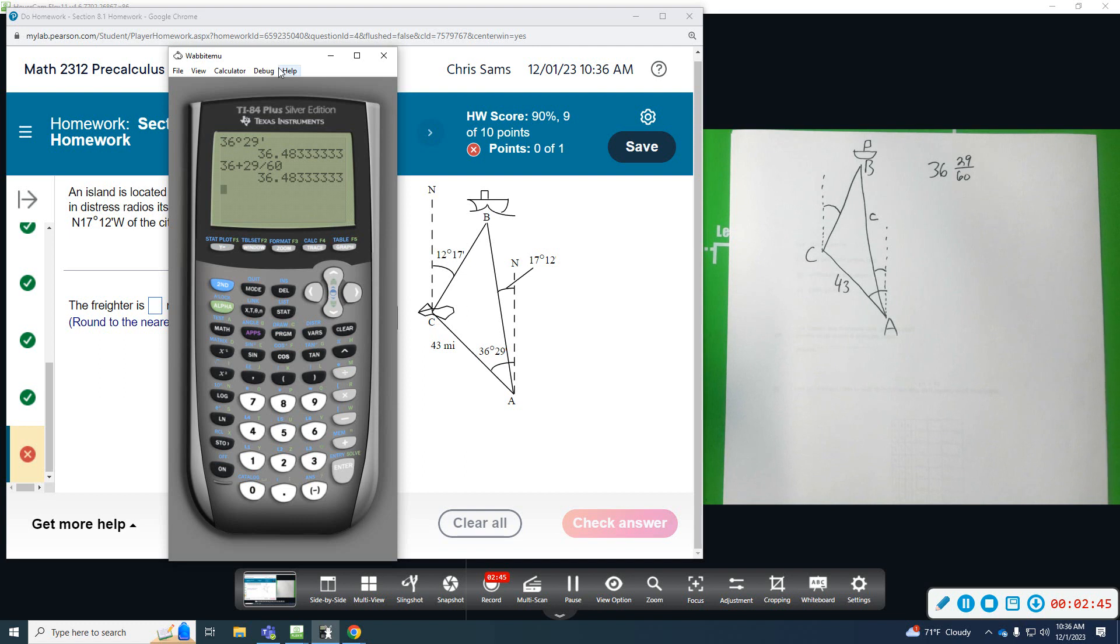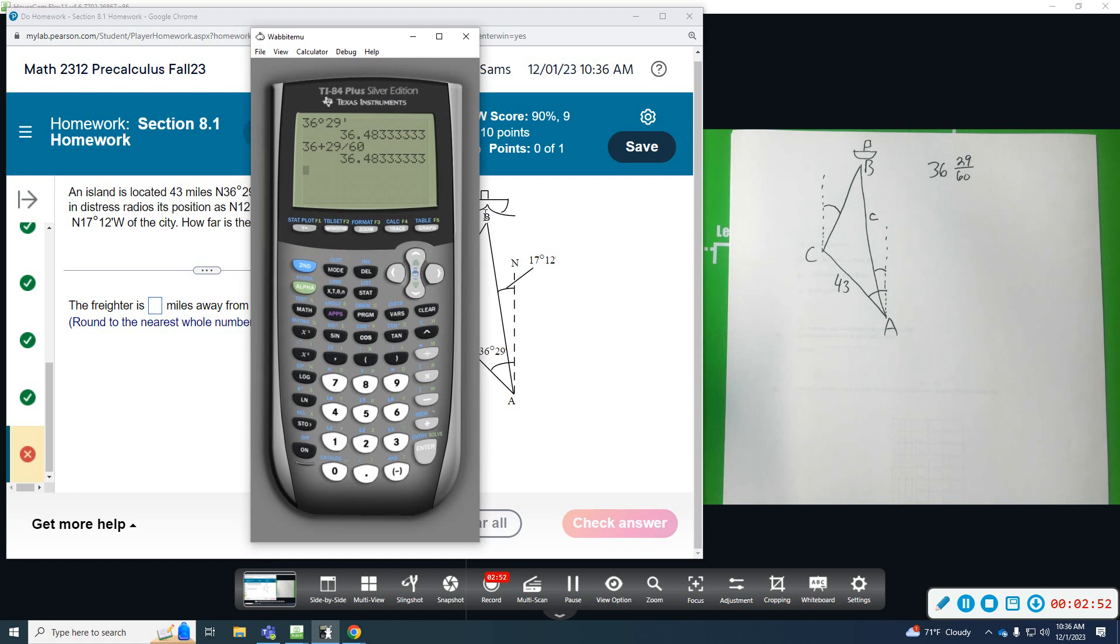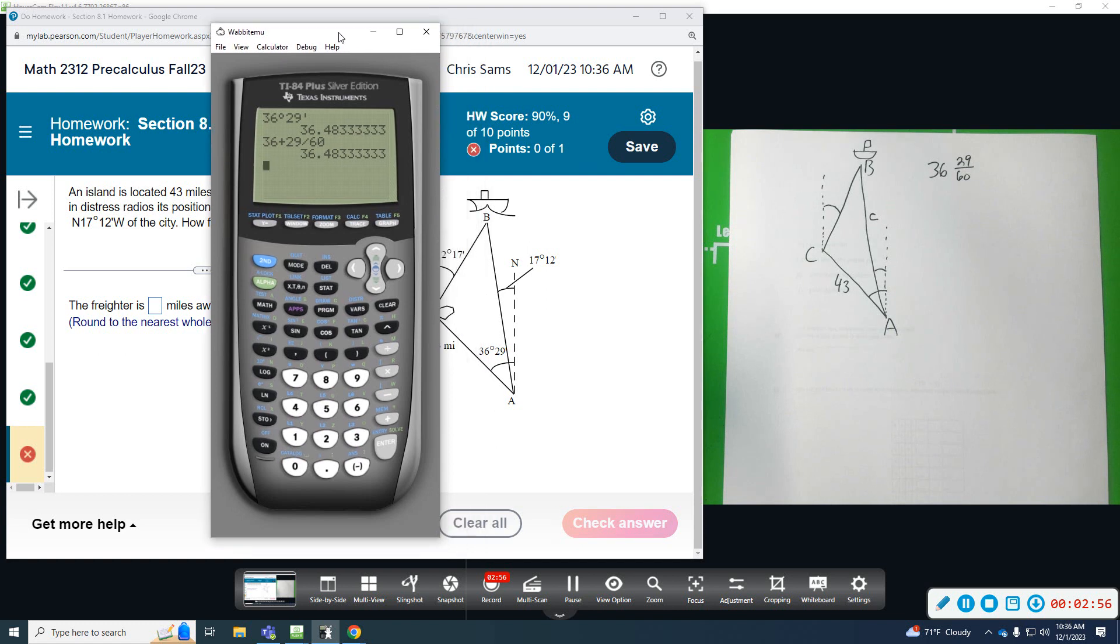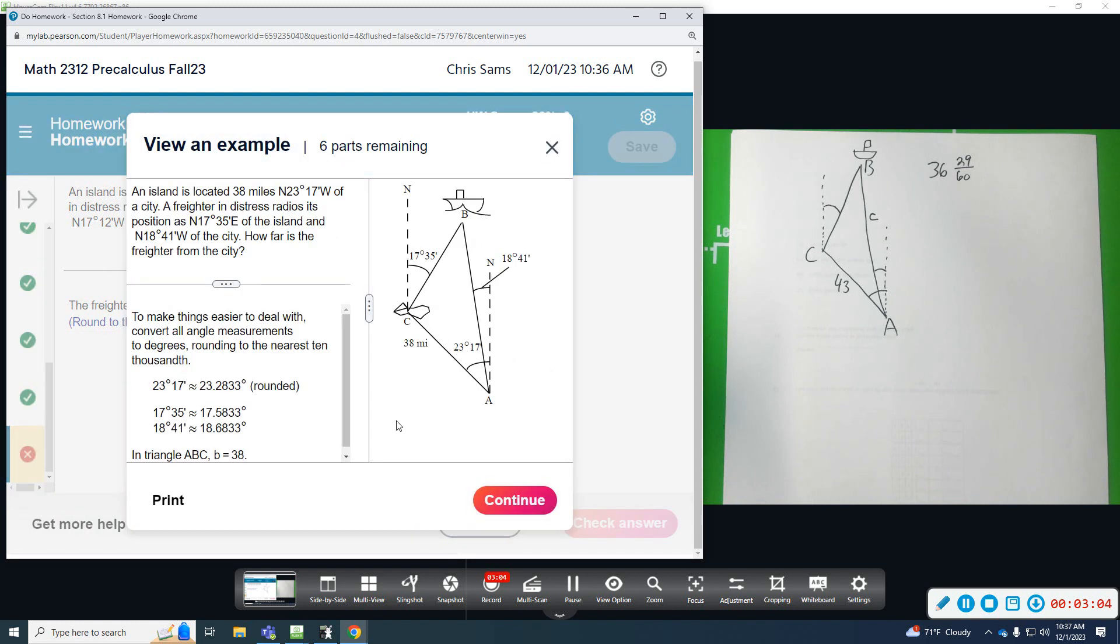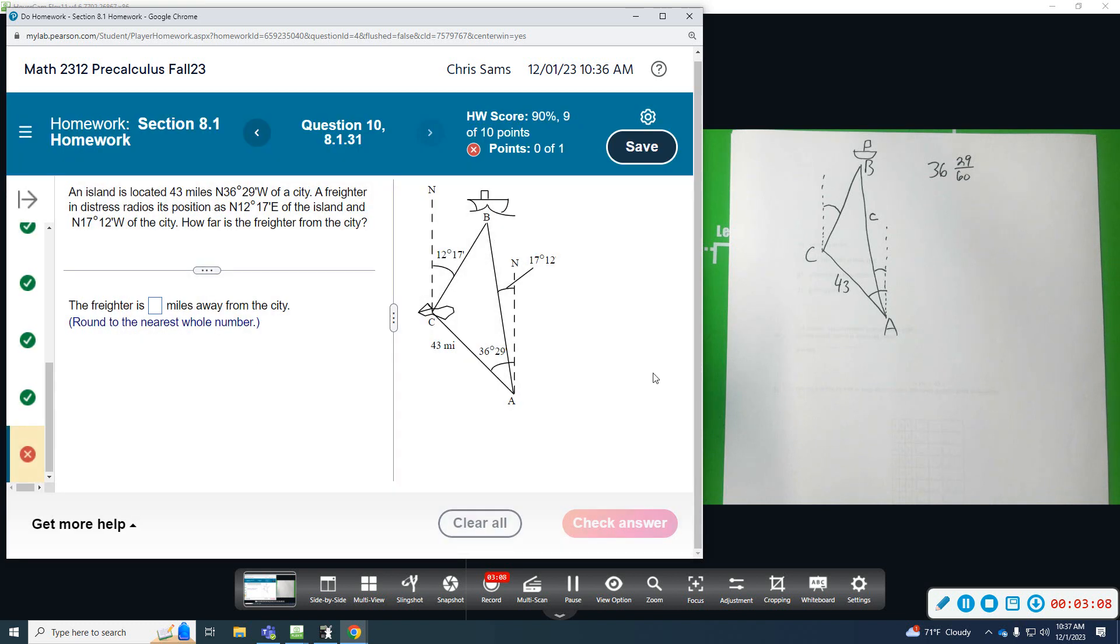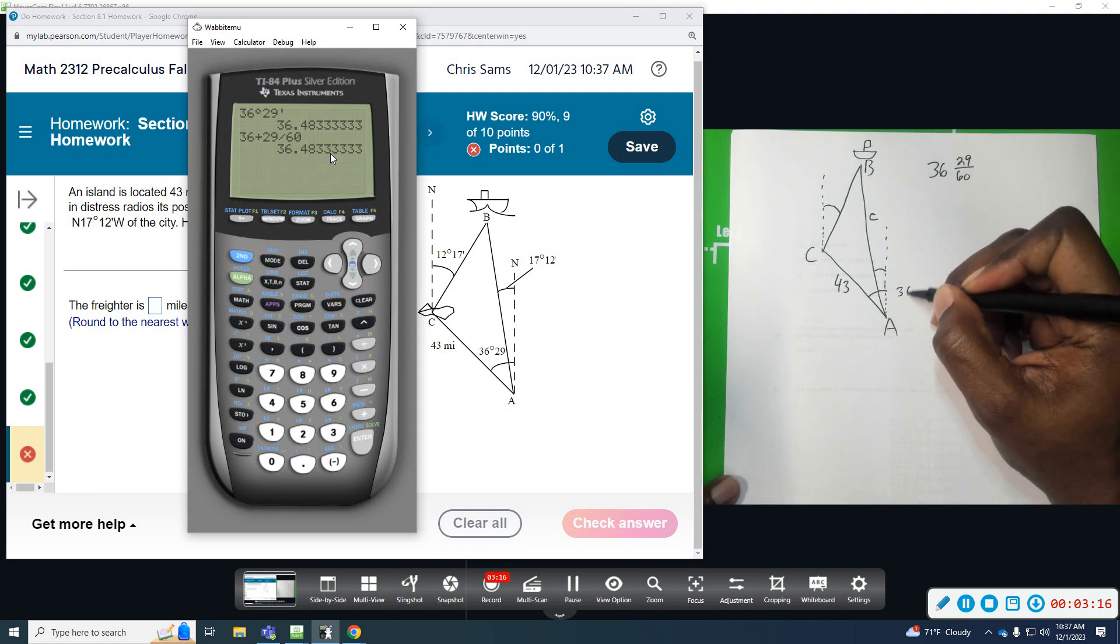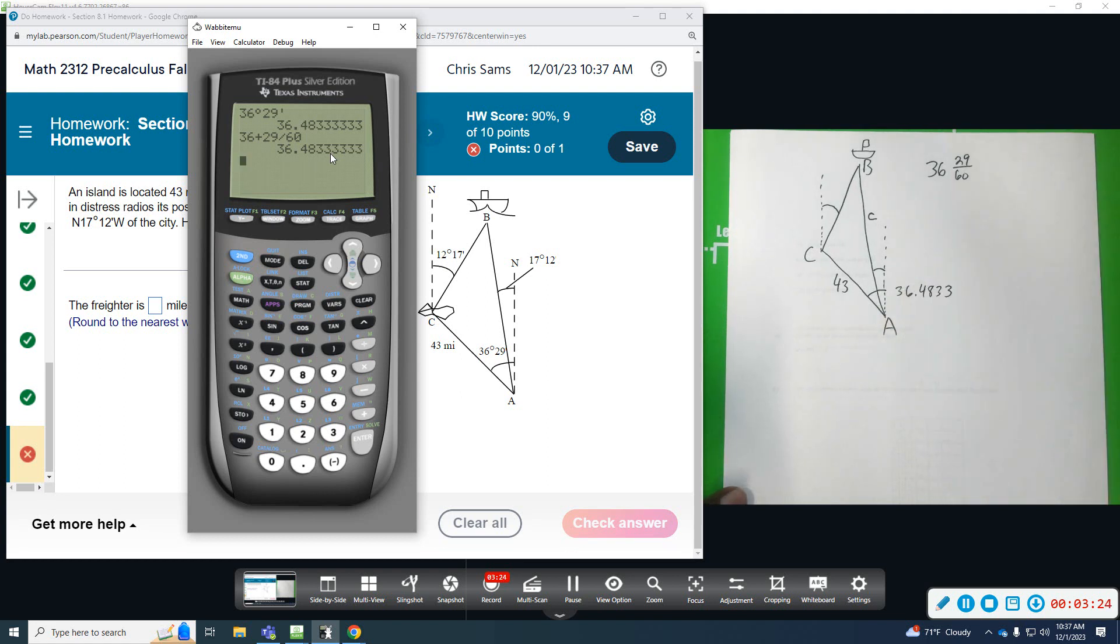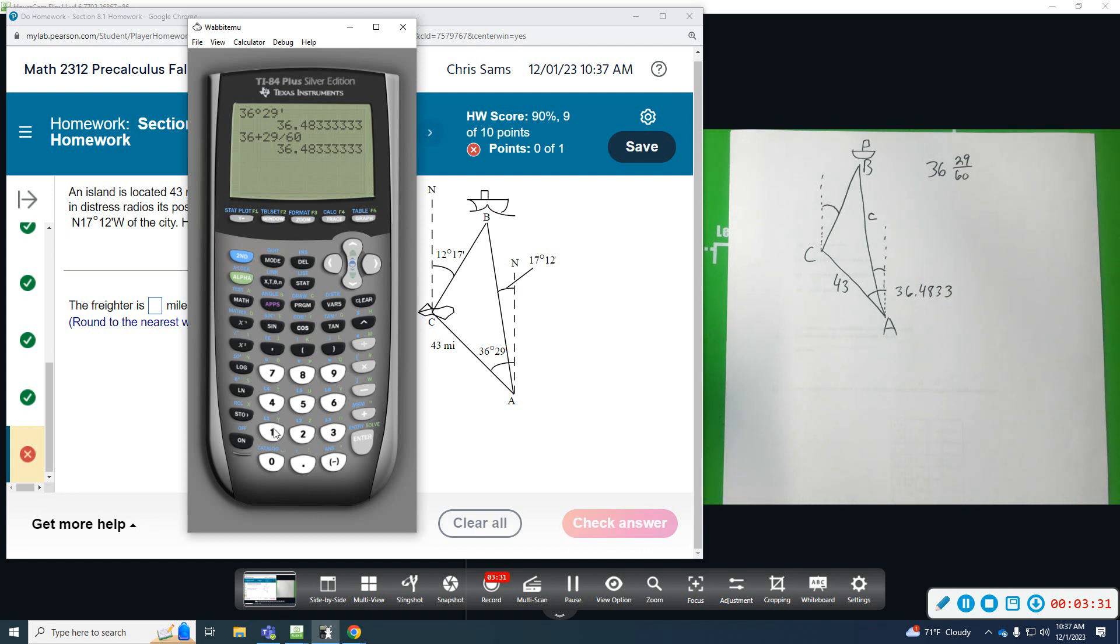Now, I'm not told how many decimal places to round to, and you want to be careful because rounding at multiple stages will tend to throw your answer off. According to the example that they give, they round to four decimal places. So, I'm going to round my angles to four decimal places. So, this angle here, this whole angle, I'm going to round that to 36.4833. I need to do the 17.12. Let's find out what that is in degree decimal form. 17 plus 12 over 60 gives me 17.2.